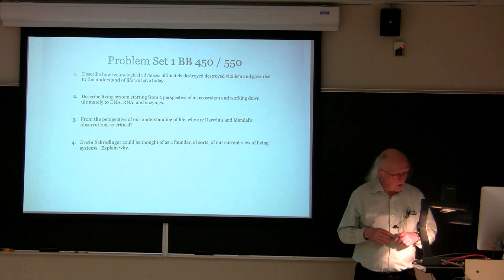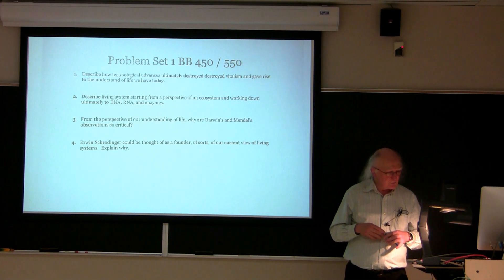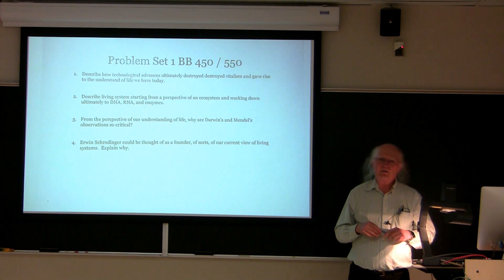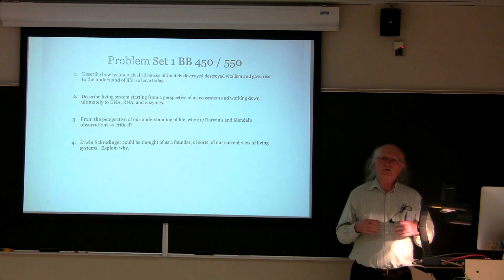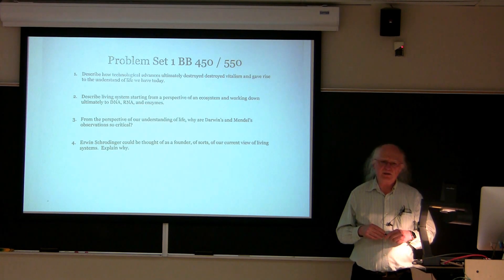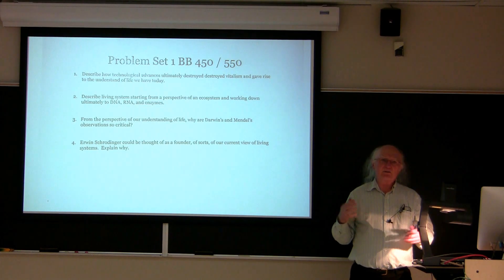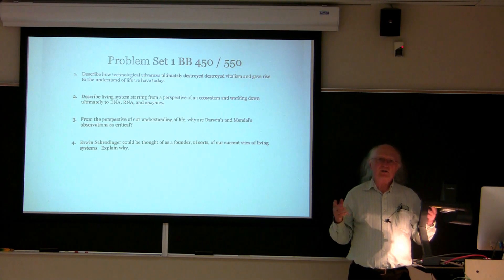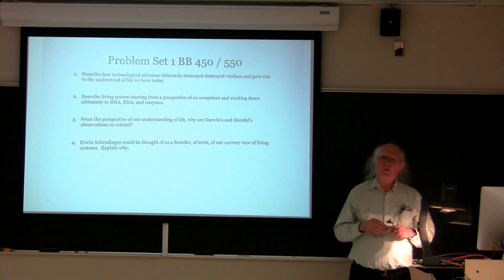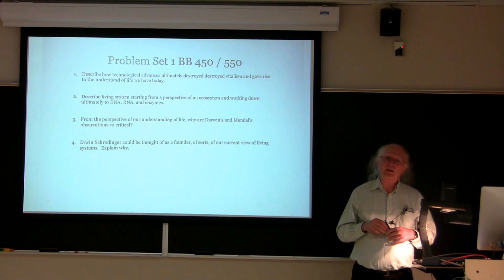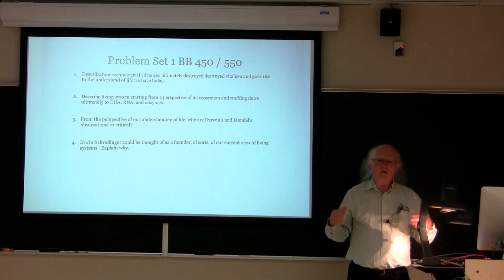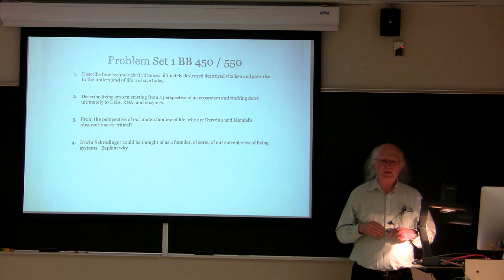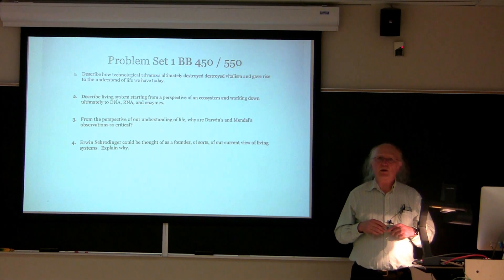The idea that all organisms are related and didn't just spring up out of the blue, but could be traced back evolutionarily, is the debt we owe to Darwin. Erwin Schrödinger can be thought of as a founder of sorts of our current view of living systems. In his book 'What is Life?' in the 1930s, he first got people thinking about what was below the cellular level that caused cells to be what they were. We still argue the question — what is life? But we do know that the basis of life of a living cell is rooted in molecules, and Erwin Schrödinger deserves recognition for that.